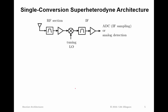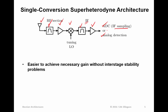Single conversion superhet architecture: we have an antenna, pre-selection, gain — at least some fraction of the gain — then a tuning LO doing frequency mixing, and then a lower IF stage where we have some more selectivity and more gain. Then we can either be digitizing (IF sampling) or doing analog detection. It's easier to achieve the necessary gain without interstage stability problems, because RF that ends up in the power supply from one amplifier may make it back, but it's at a different frequency, so it's less likely to cause a problem.